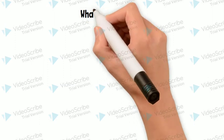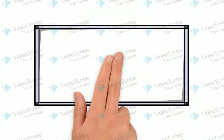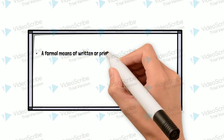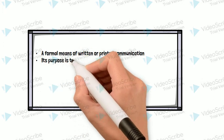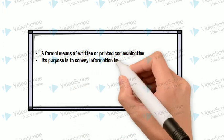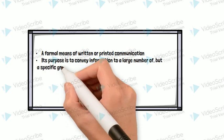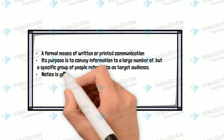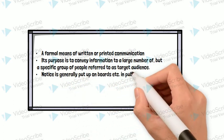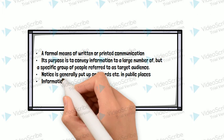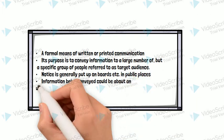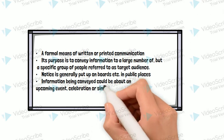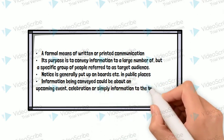The question is: what is a notice? A notice is a formal means of written or printed communication. Its purpose is to convey information to a large number of, but a specific group of, people — referred to as its target audience. Notices are generally put up in public places on boards. The information conveyed could be about something that has already happened, or mostly about an upcoming event, celebration, or simply information to be conveyed to the target group.